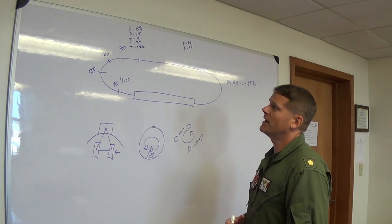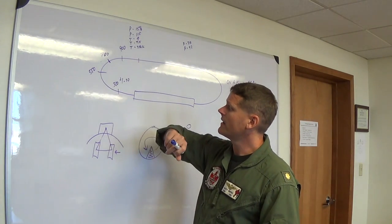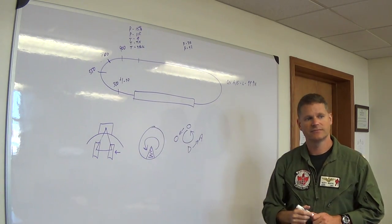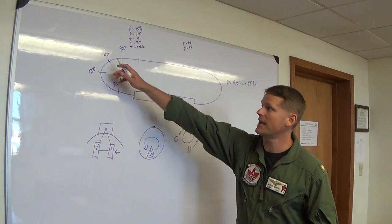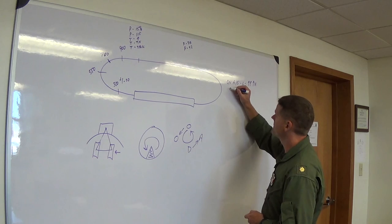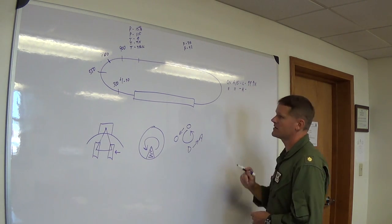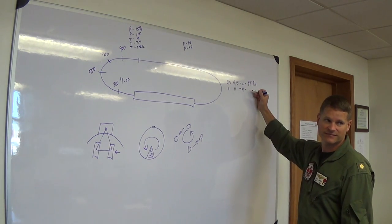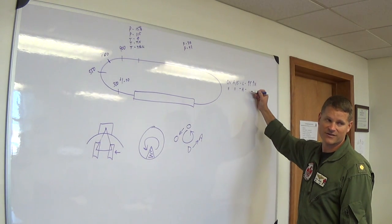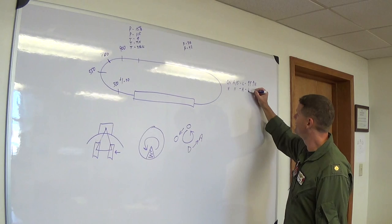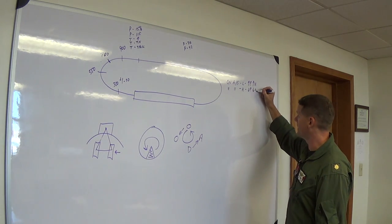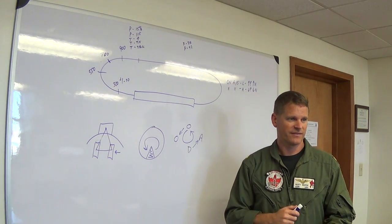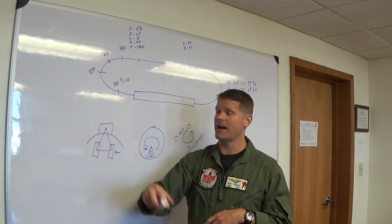New situation: halfway through the turn from 180 to 90, instead of 700 feet I'm at 800 feet, still at 115 knots. You're high and on airspeed. How do you get back to the 90 at 550? Reduce power and lower the nose — PCL back with your left hand and stick forward with your right hand.